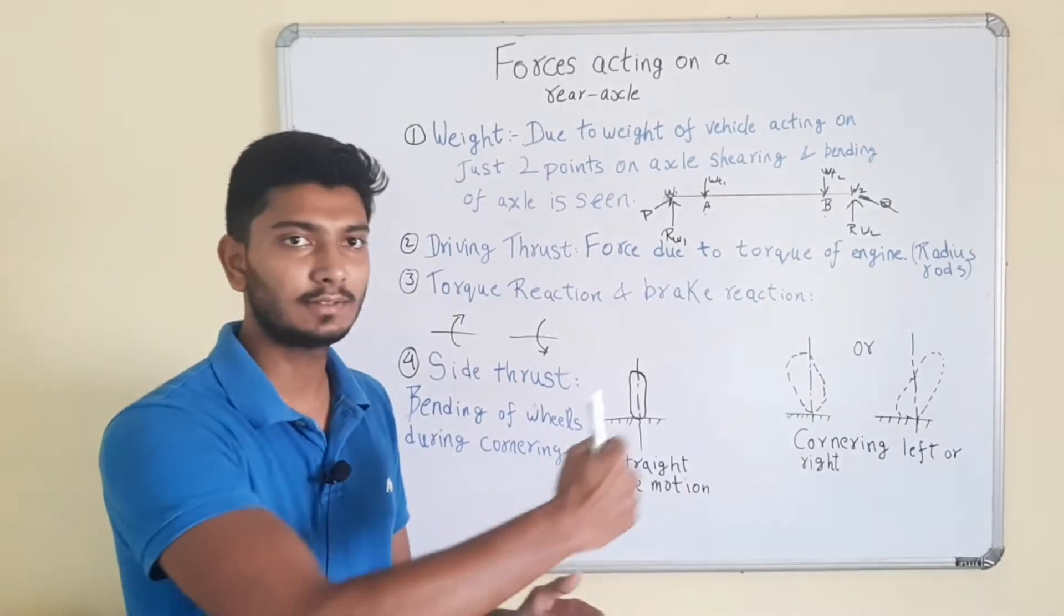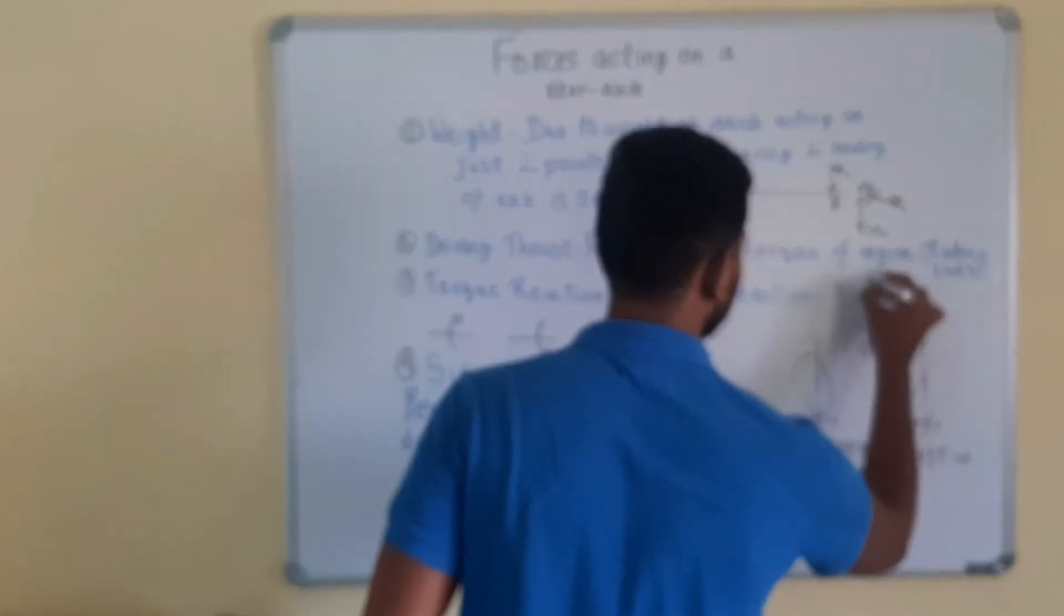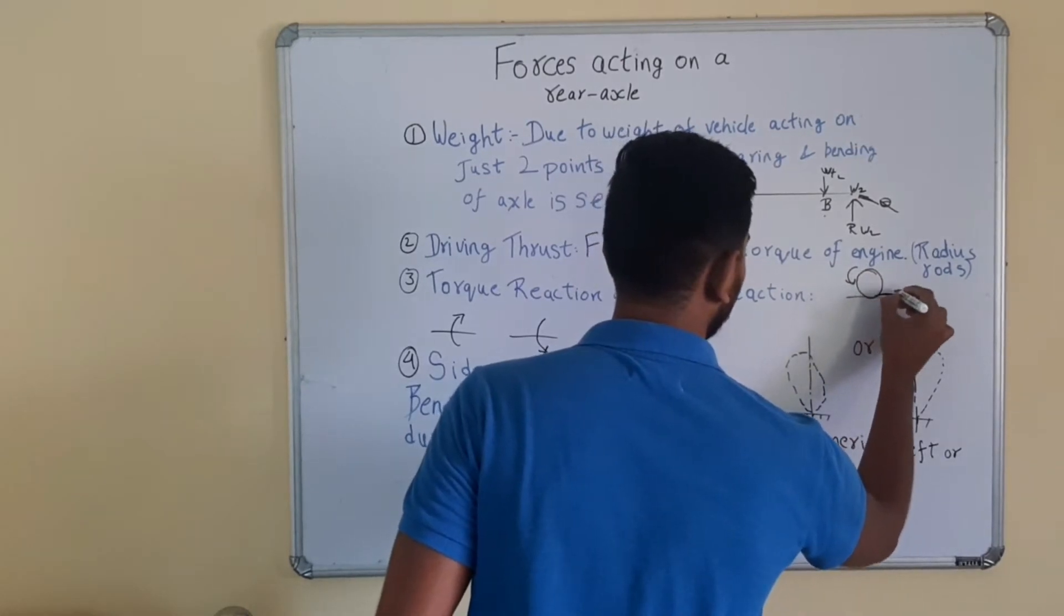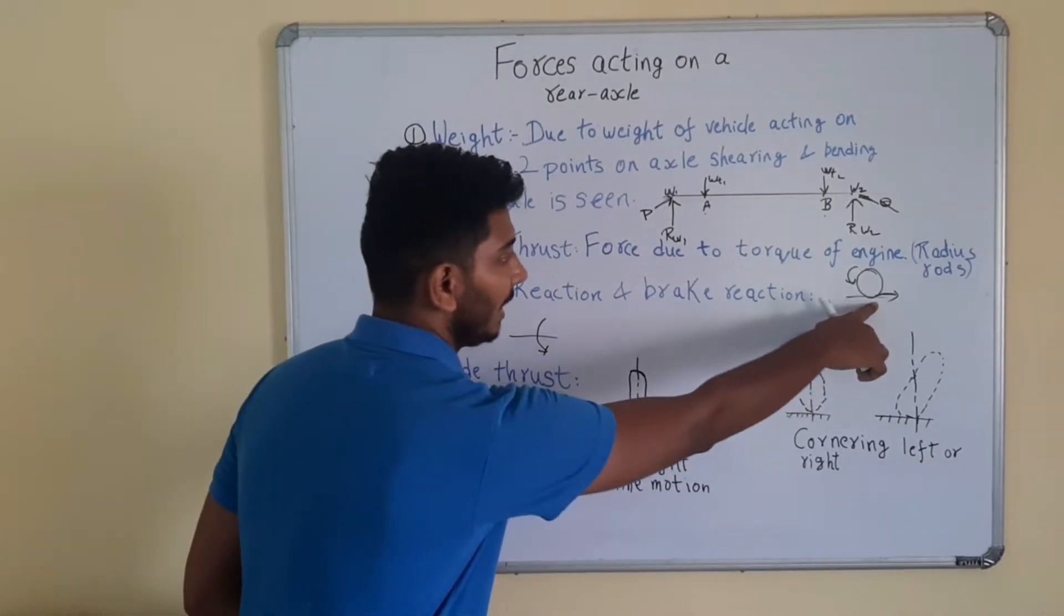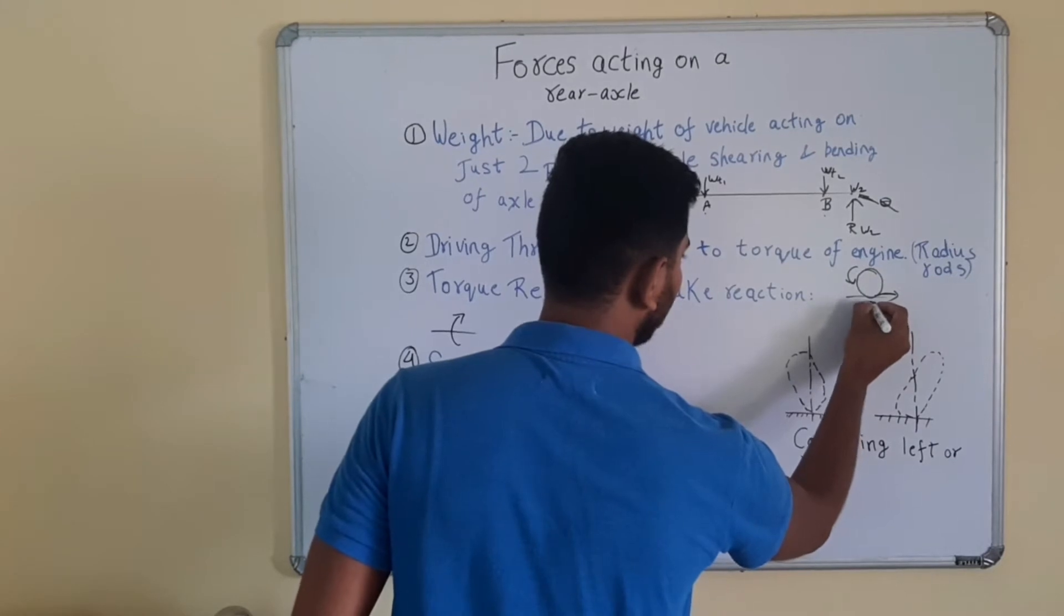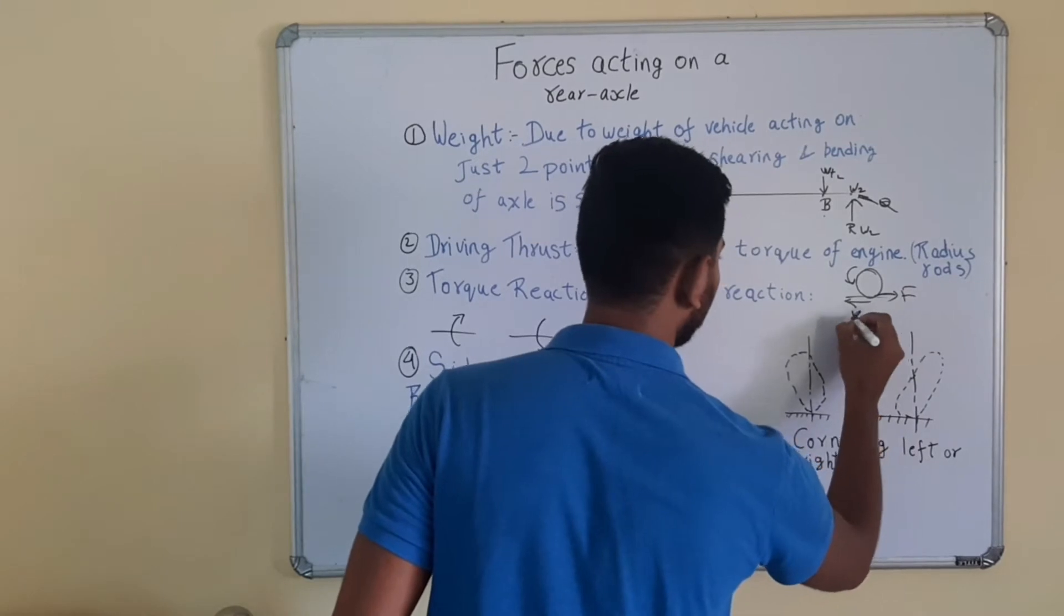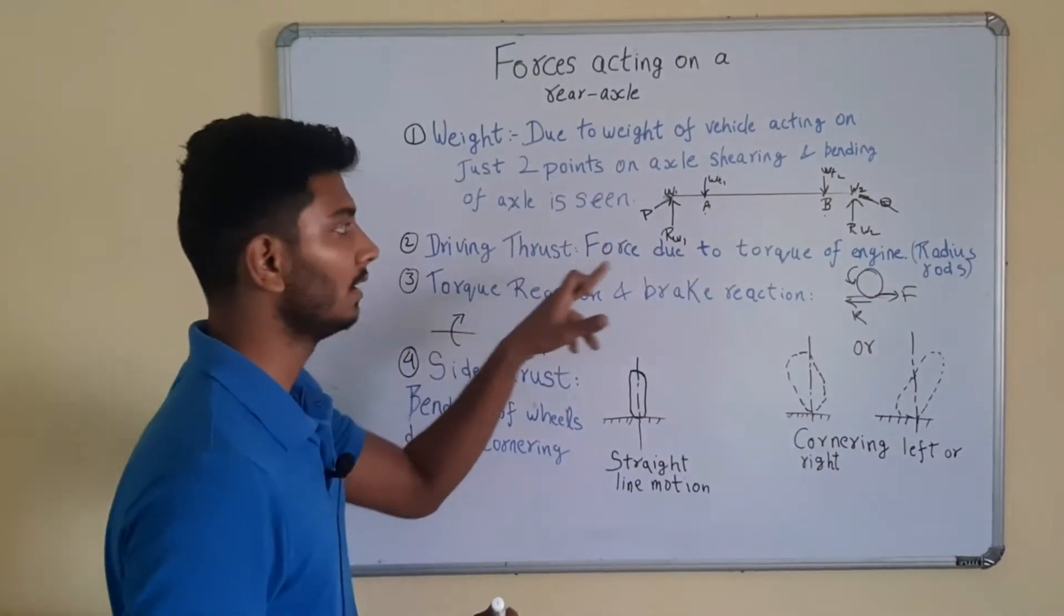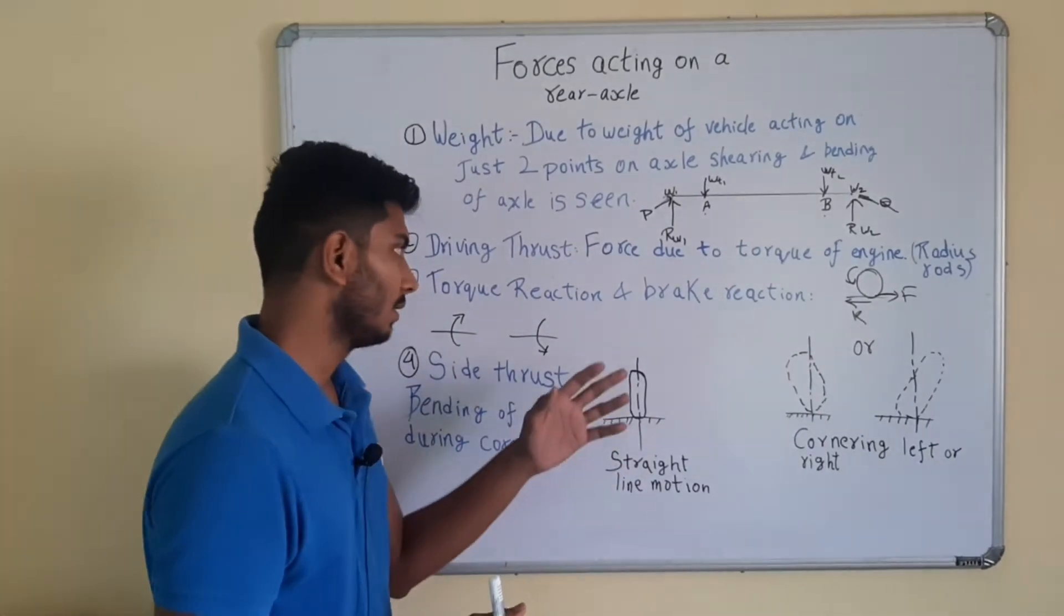Now when these wheels try to move, let's say this is the wheel and this is the motion. So it would create a force in this side and the opposite reaction is this. This is F and this is R. So this R is called the driving thrust which is created by the suspension of the vehicle.